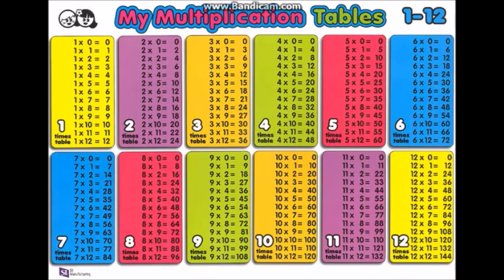2 x 0 is 0, 2 x 1 is 2, 2 x 2 is 4, 2 x 3 is 6, 2 x 4 is 8, 2 x 5 is 10, 2 x 6 is 12, 2 x 7 is 14, 2 x 8 is 16, 2 x 9 is 18, 2 x 10 is 20, 2 x 11 is 22, 2 x 12 is 24.